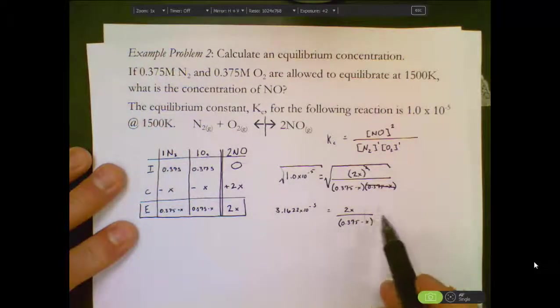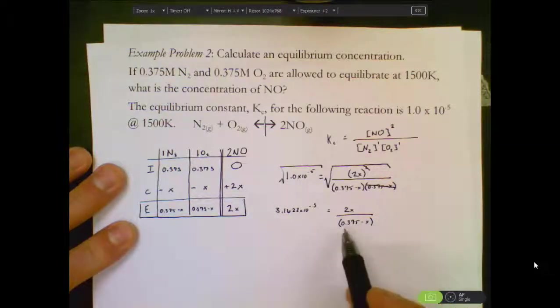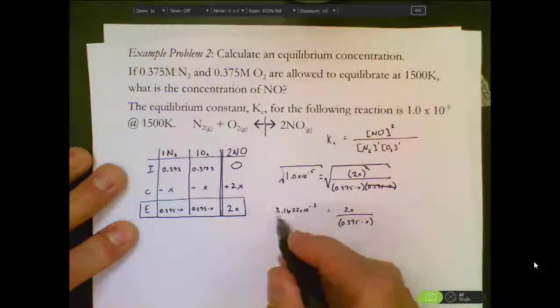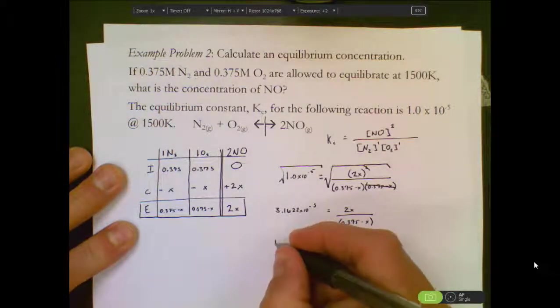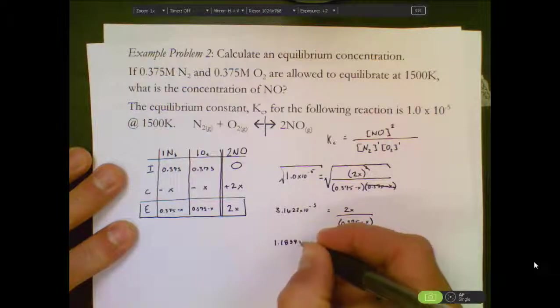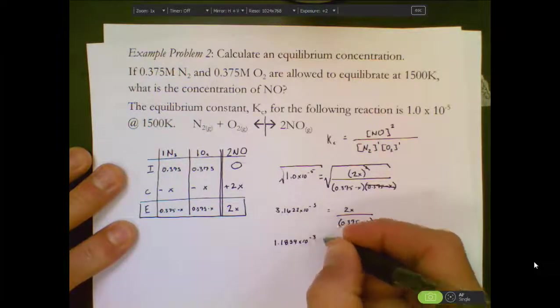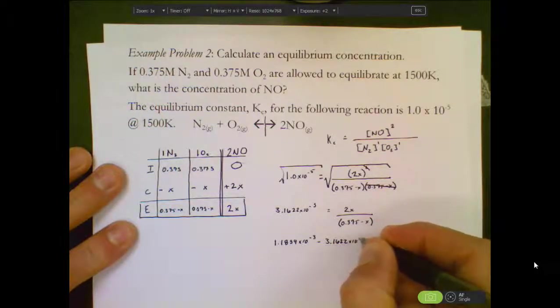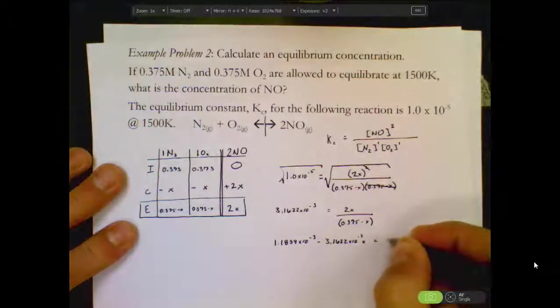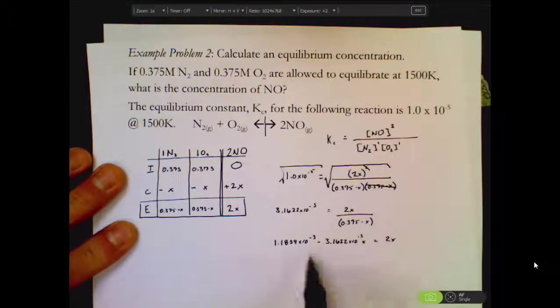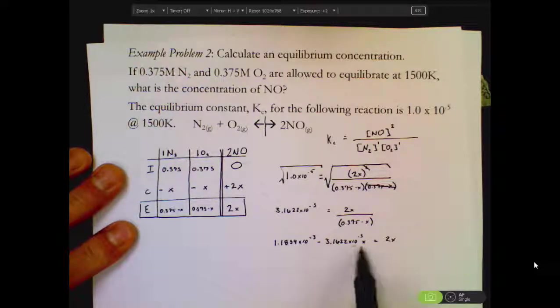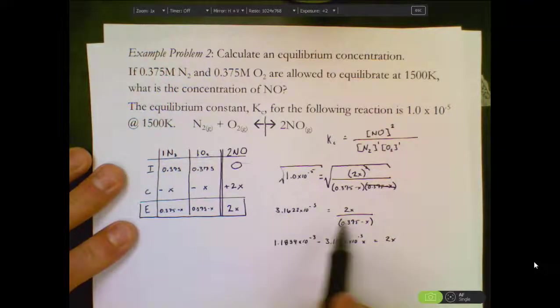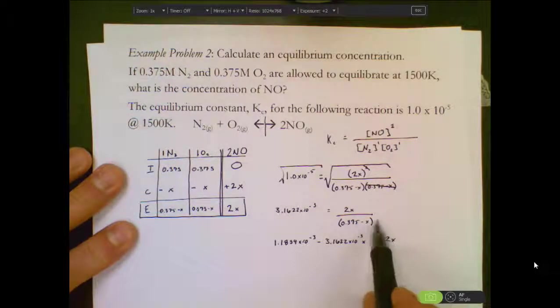Since I'm trying to solve for X, I want to get rid of this fraction. I'll multiply both sides by the 0.375 minus X, and that's going to give me, once distributed, 1.1859 times 10 to the negative 3rd minus 3.1622 times 10 to the negative 3rd X, which is all going to be equal to 2X. So this part right here is when the 0.375 minus X is multiplied, distributed with this. This distributes through both because I'm bringing this to the left side.